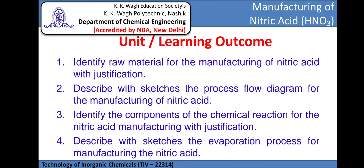The unit learning outcomes include: identify raw material for the manufacturing of nitric acid with justification; describe with sketches the process flow diagram for the manufacturing of nitric acid; identify the components of the chemical reaction for nitric acid manufacturing with justification; and describe with sketches the operation process for manufacturing nitric acid.